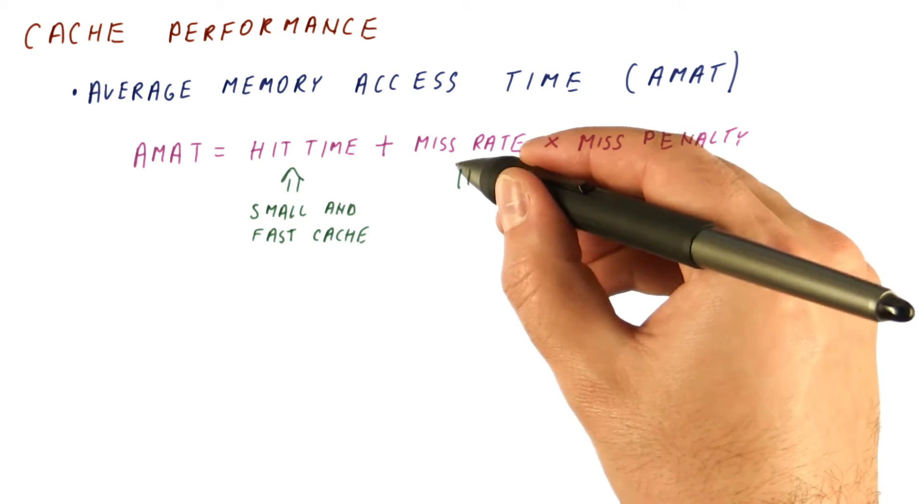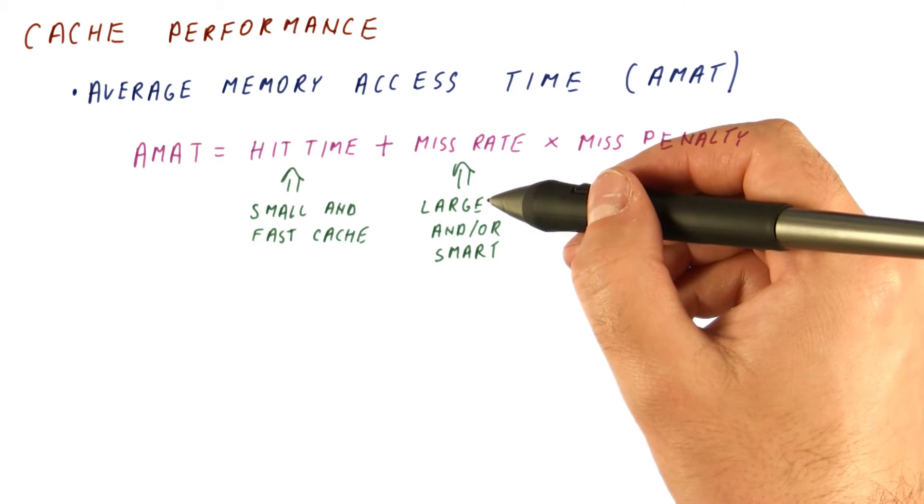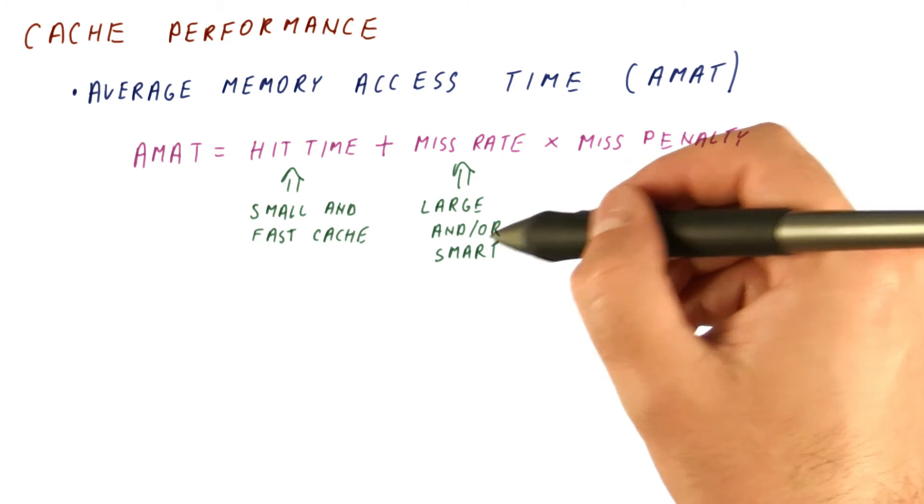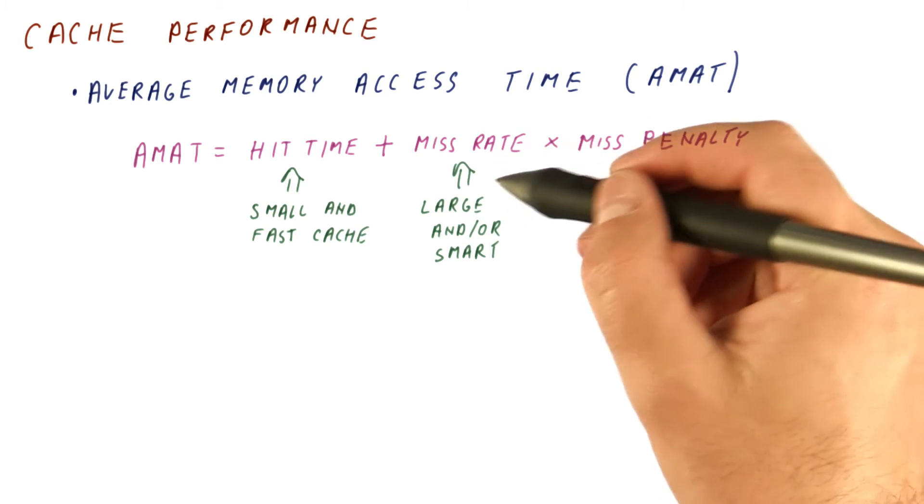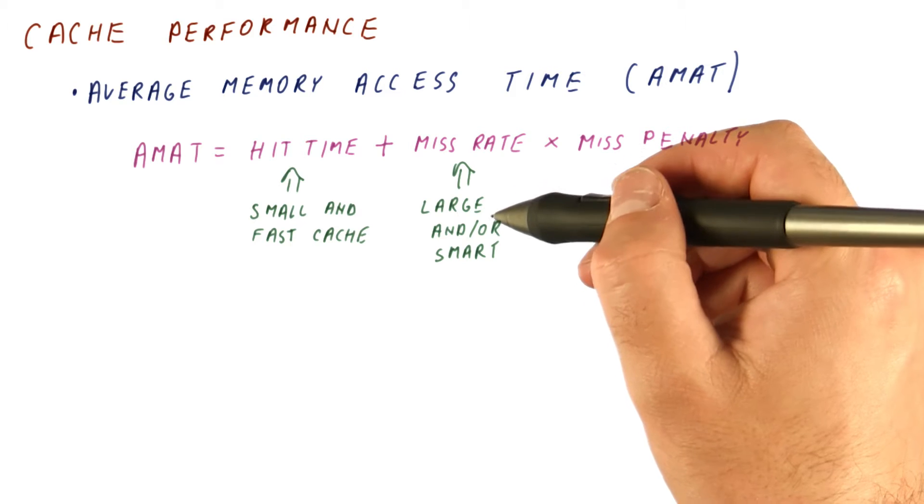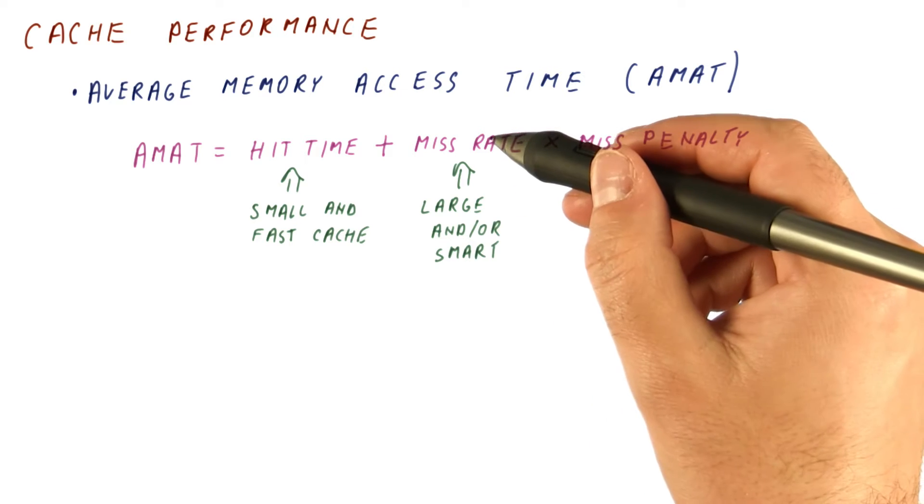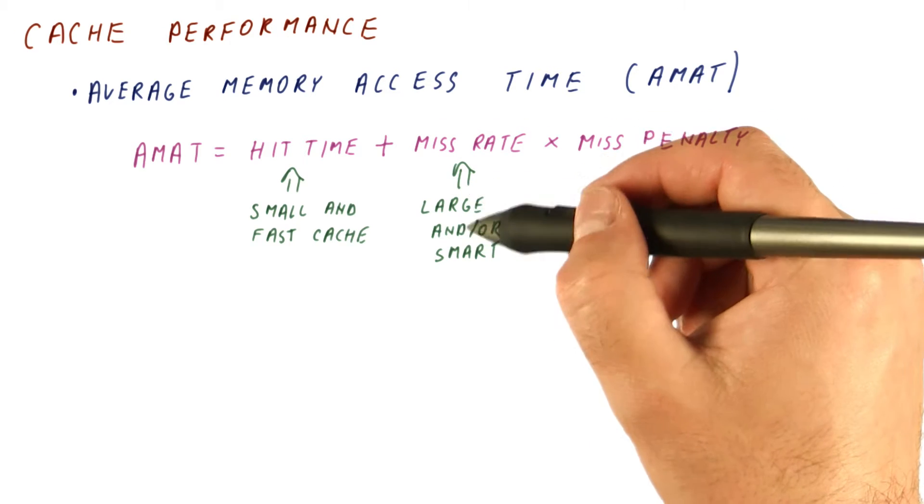We want a low miss rate, which means we want our cache to be large and or smart. If it's a large cache, more stuff will fit in it, so we will miss less often. Or if it's smart, it will know better what to keep inside. So again, we will have fewer misses.